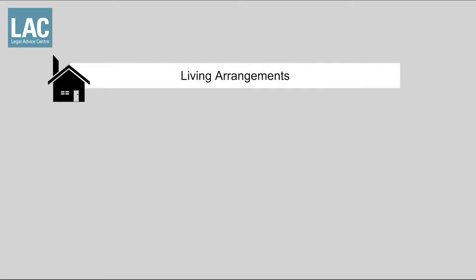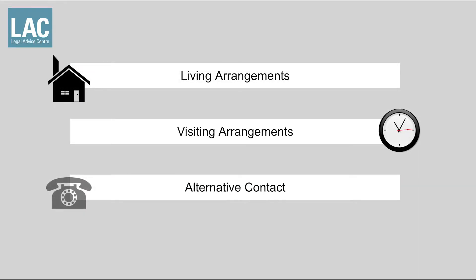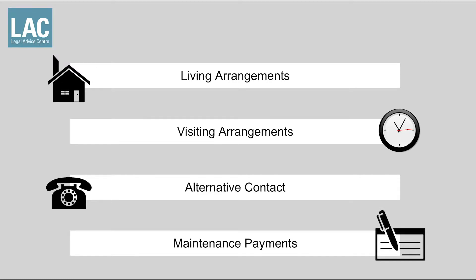Mediation allows for partners to reach a common ground solution assisted by an unbiased third party, a solicitor or professional mediator, in a private and confidential setting. These sessions can help you determine where the child will live, when the child will spend time with each parent, when or what other types of contact may take place such as phone calls, occasional visits, longer stays, and how child maintenance payments will be carried forth.